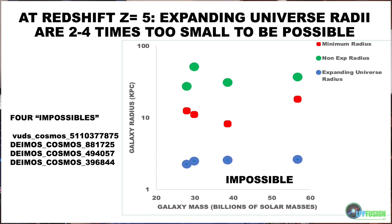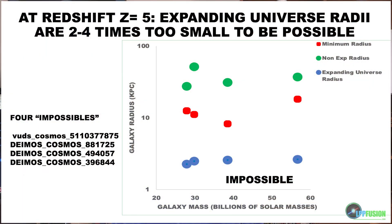I call these the impossible galaxies. The galaxies themselves are not really impossible — we've observed them, so we know they exist. What's impossible is the predictions of the Big Bang theory. They make predictions that are absolutely contradicted by this independent measurement of the radius.